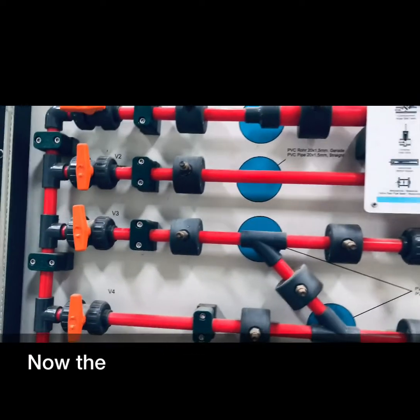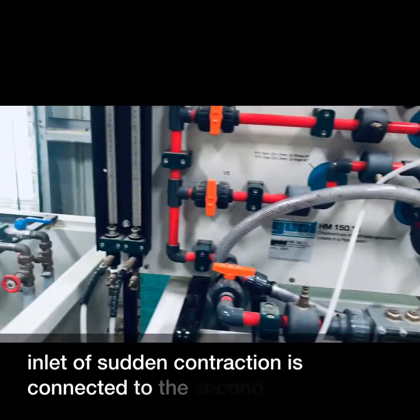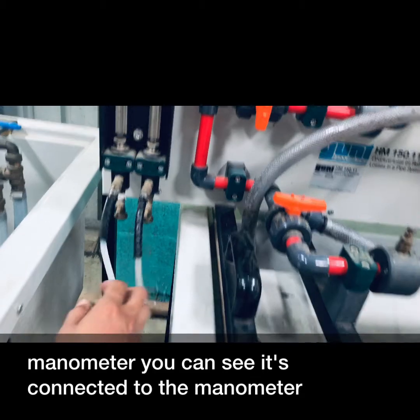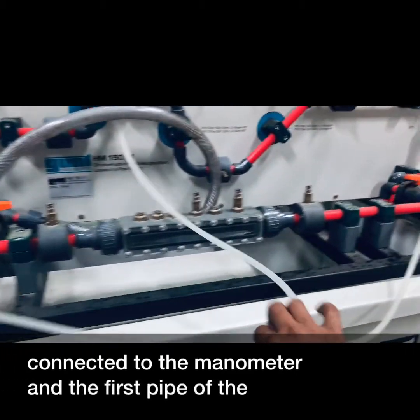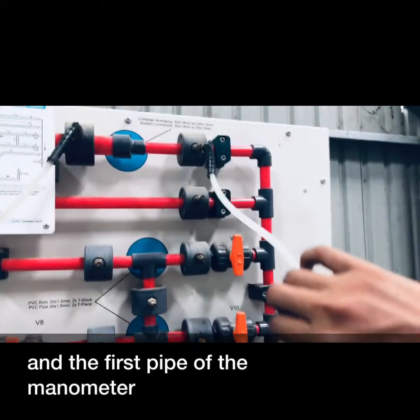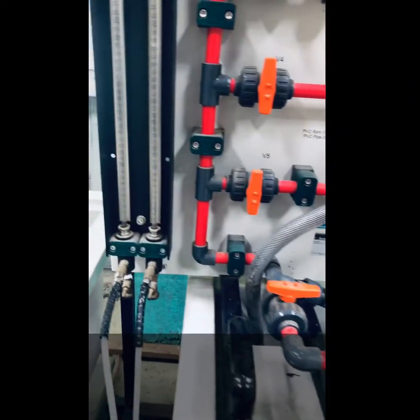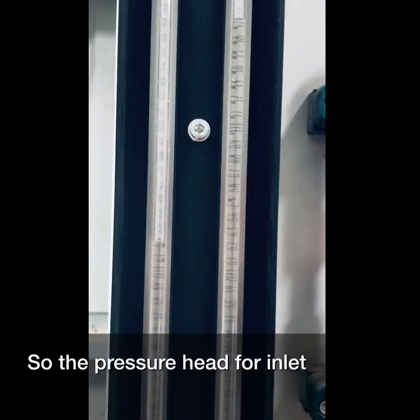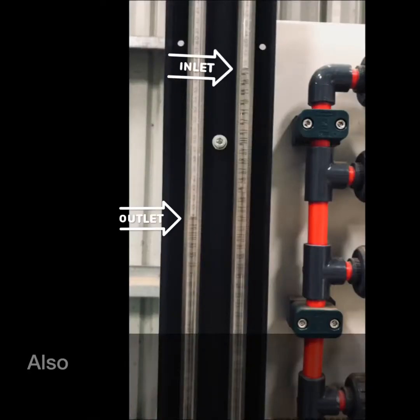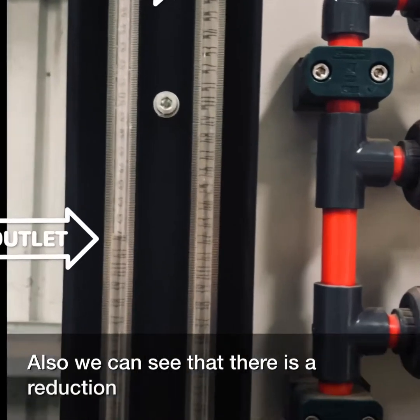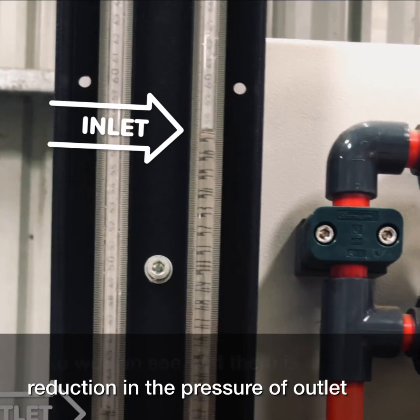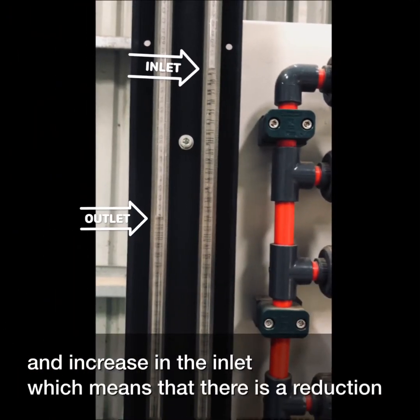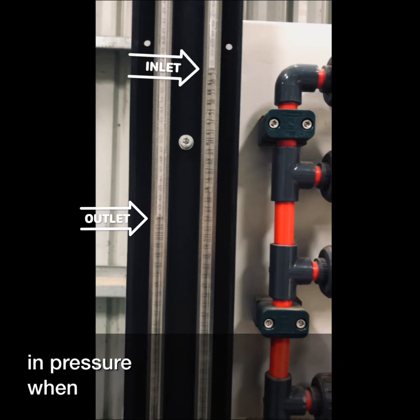Now the inlet of sudden contraction is connected to the second pipe of the manometer, and the first pipe of the manometer is connected to the outlet. The pressure head for inlet and outlet is shown here. We can see that there's a reduction in the pressure of the outlet and increase in the inlet, which means there is a reduction in pressure when the area is reduced, which proves Bernoulli's theorem.